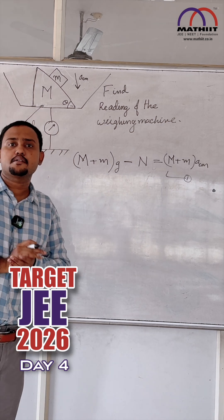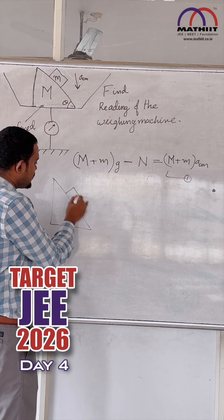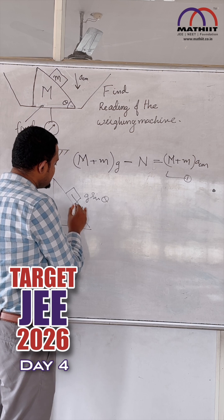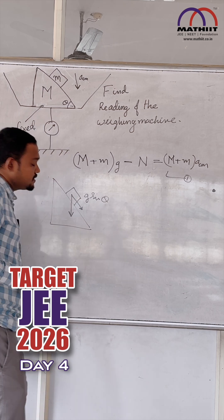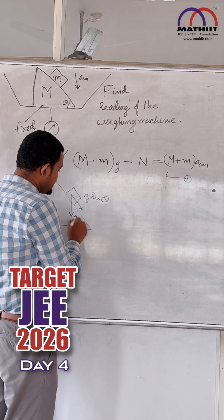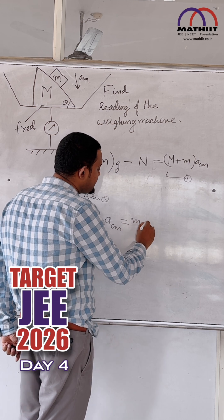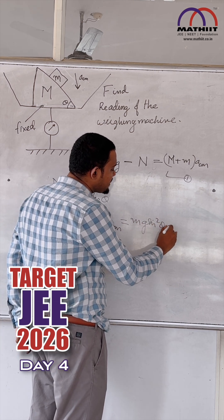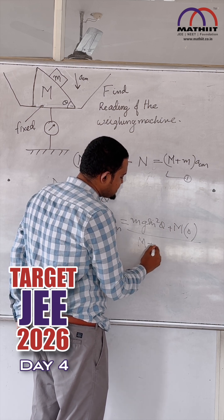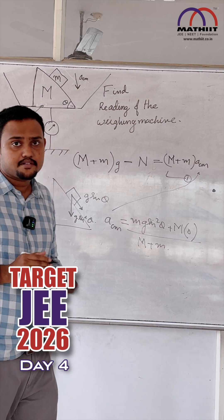If we get the acceleration of the center of mass, the problem is solved. The small mass m is moving downwards along the incline with a relative acceleration of g sin θ. Its acceleration in the y-direction is g sin²θ. So, the acceleration of the center of mass equals m·g sin²θ plus M·0, divided by (m + M). We substitute this into our first equation to find the normal reaction.